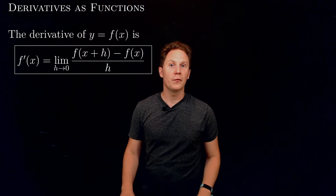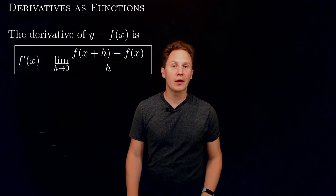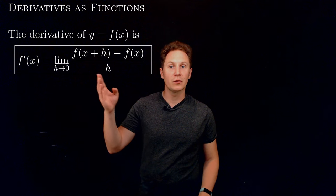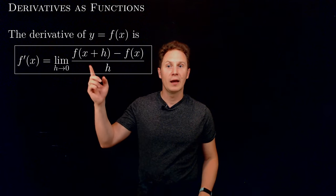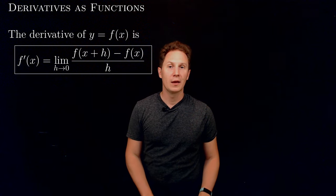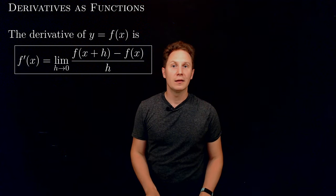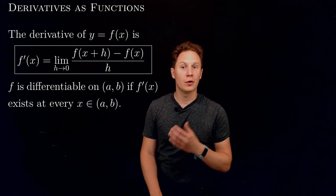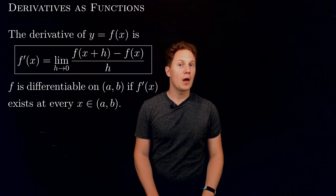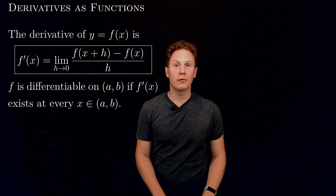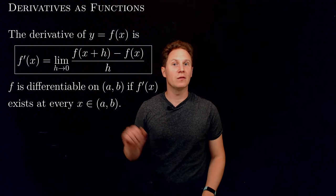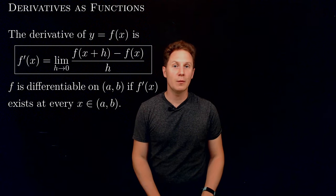So we say that the derivative of y equals f is f'(x), which is the limit of the difference quotient of f at x as h approaches 0. And we say that the function f is differentiable on an open interval (a, b) if f'(x), the derivative of f at x, exists at every point x inside that interval.